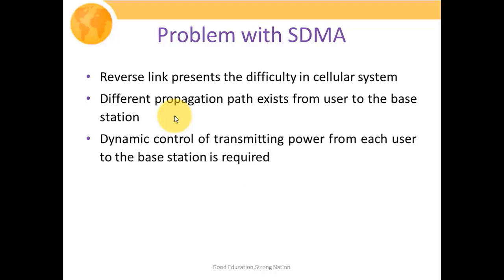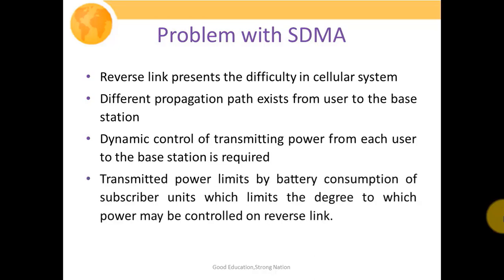Dynamic control of transmitting power from each user to the base station is required since channel conditions change in real time. In the forward link, power control is handled by the base station since it has sole authority. However, in the reverse link, transmitted power is also limited by the battery consumption of the subscriber unit, which limits the degree to which power can be controlled.